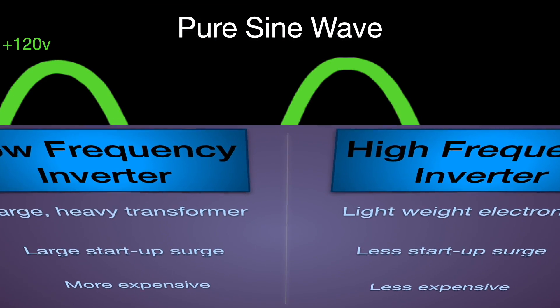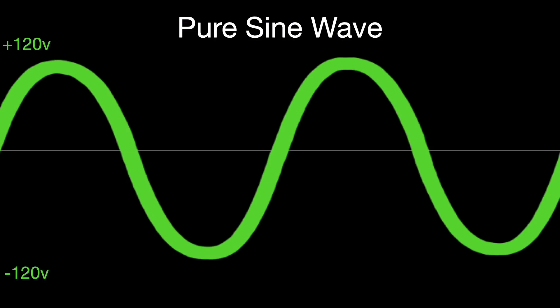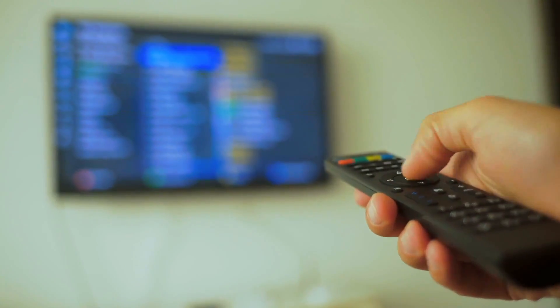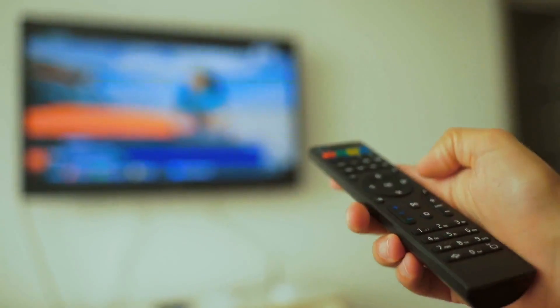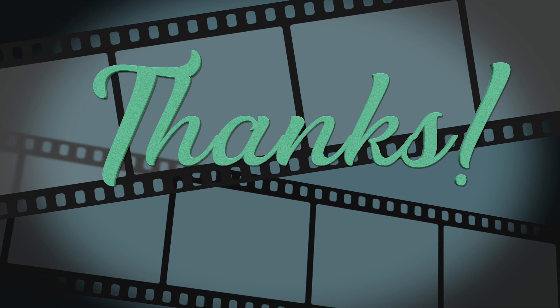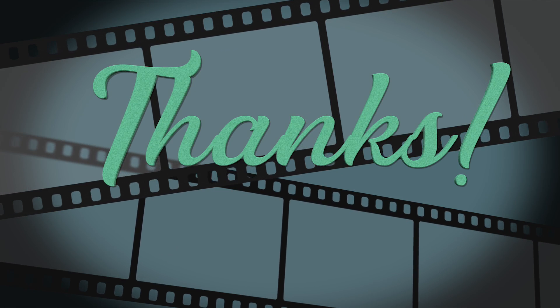It is important though that you end up with a pure sine wave. You do not want to use a modified square wave inverter. They are usually labeled as such. They'll say modified square wave somewhere in the specs. And these are not good for computers and electronics. So to make your electronics happy, stick with a pure sine wave. That wraps it up for this video.